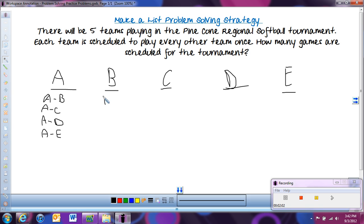So we can have Team B, and they've already played Team A. Team B can't play itself, so now they can play Team C. Team B can play Team D, and they can play Team E. So that's all the games that Team B will be able to play that haven't been counted for yet.